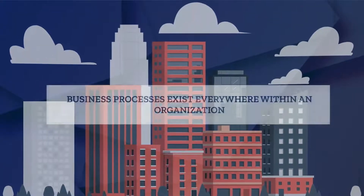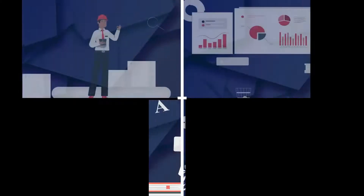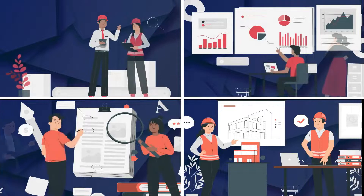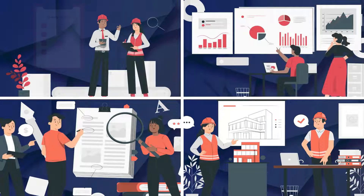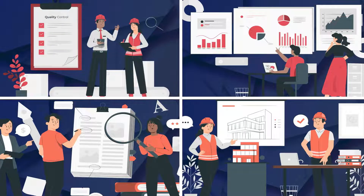Organizations have numerous business processes in place, each with its own level of complexity. There are processes for recruitment, invoicing, orders, and product development — and there are other activities that involve an increased level of complexity for creating, maintaining, and managing all business processes of an organization.